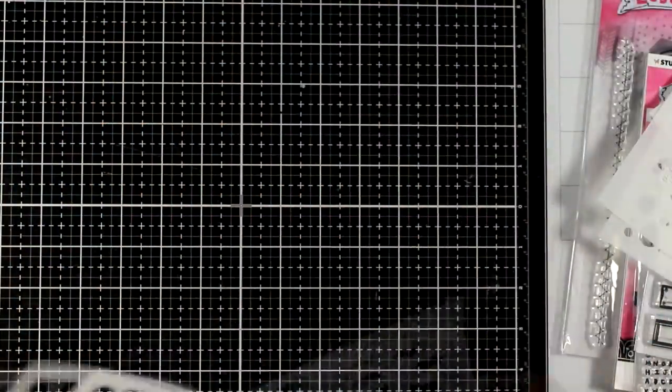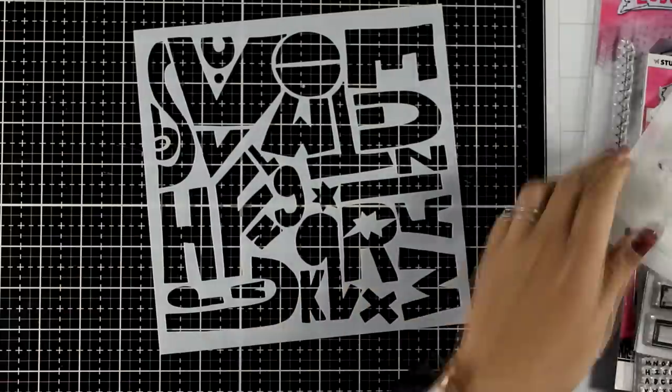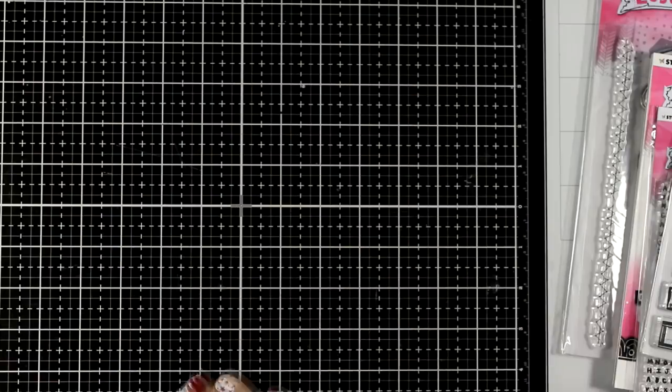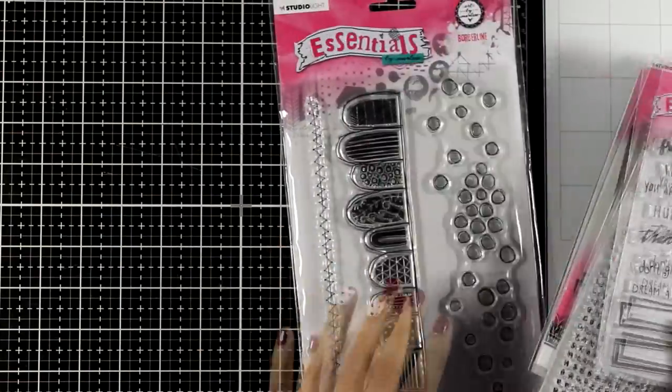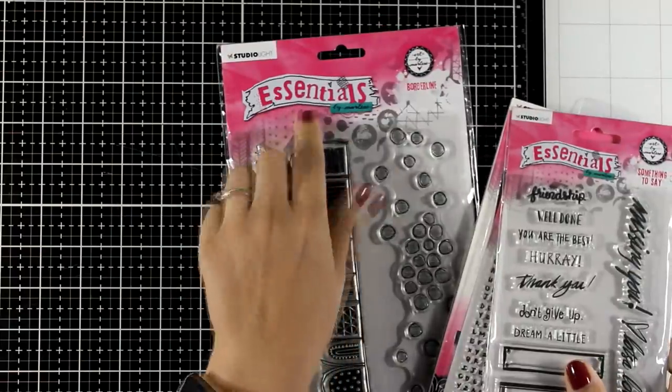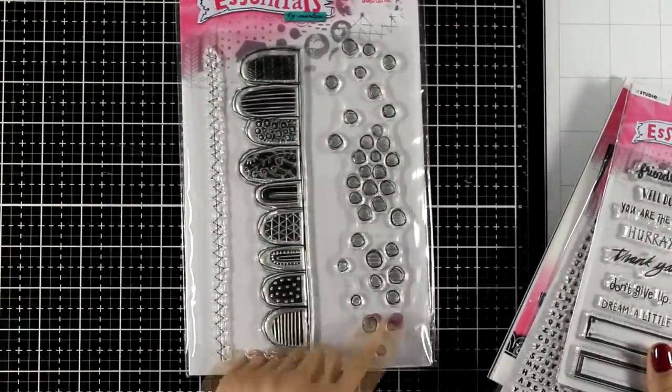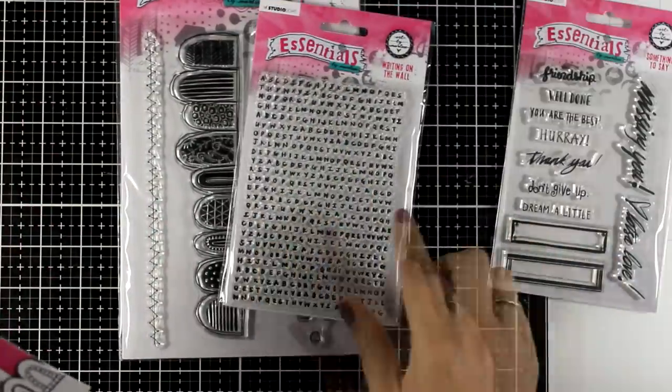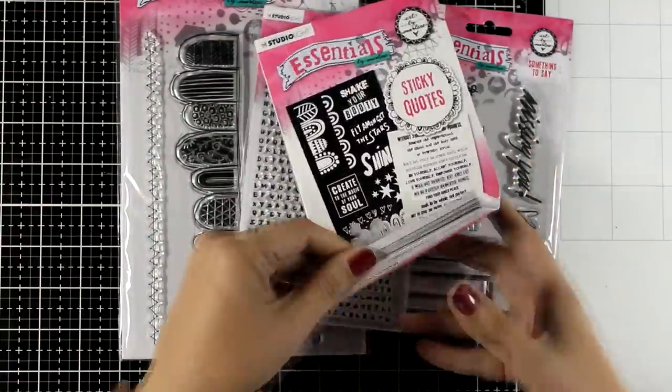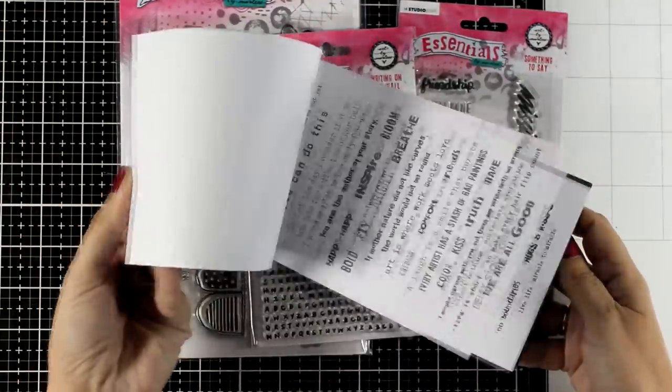There are also lovely stencils, I will be using one of them for today. But there is also another collection by Marlene which is called Essentials and when you see something labeled with that name, then you know that this doesn't go discontinued. These type of products are quite generic in design, so you can use them again and again throughout the year and you can combine them with the current collections.